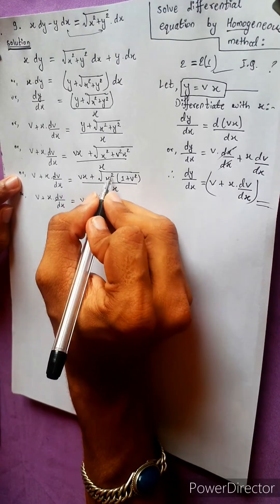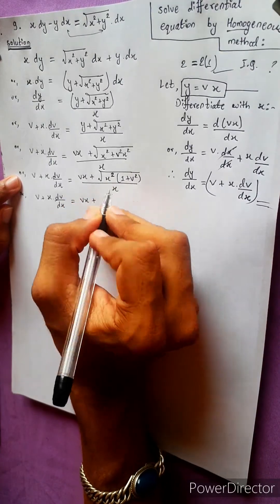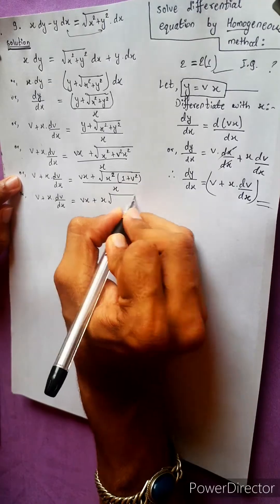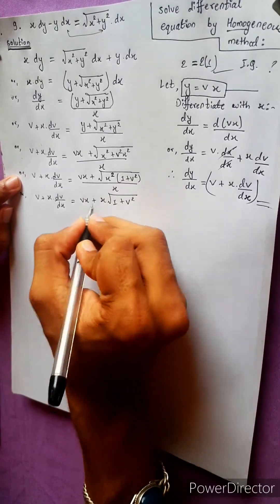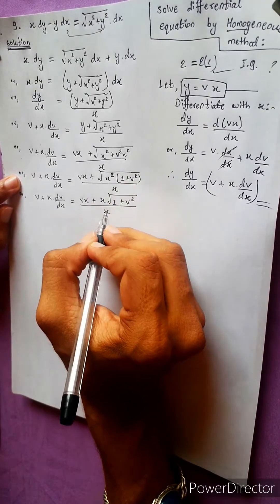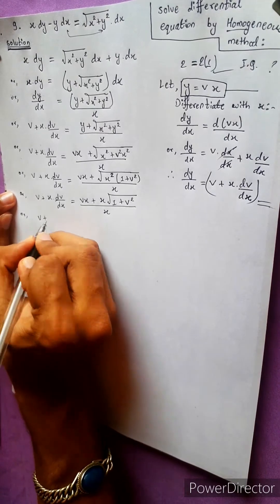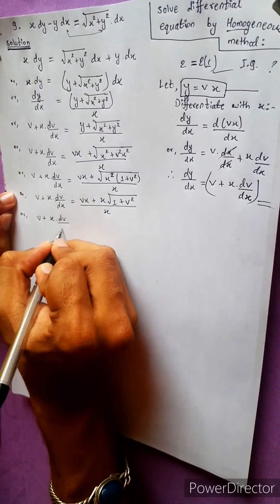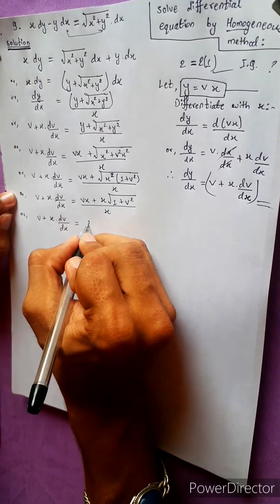b plus x db by dx equals to b plus x squared root db by dx equals to bx plus. Divide by x. Now b plus x db by dx, x is equal to — x common.